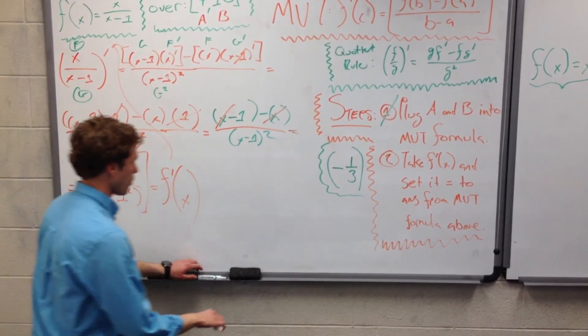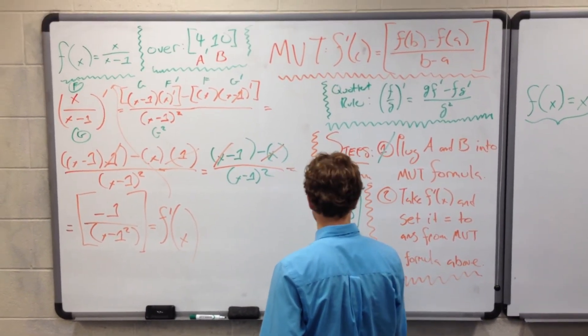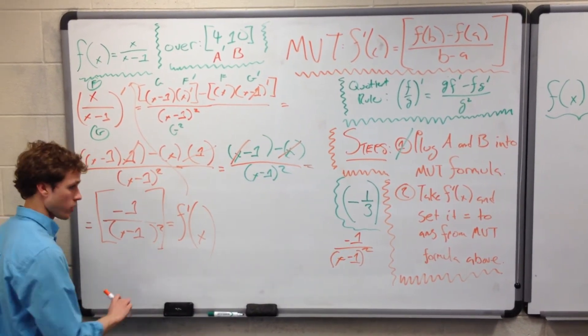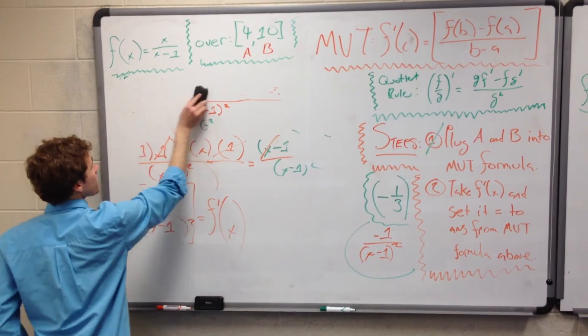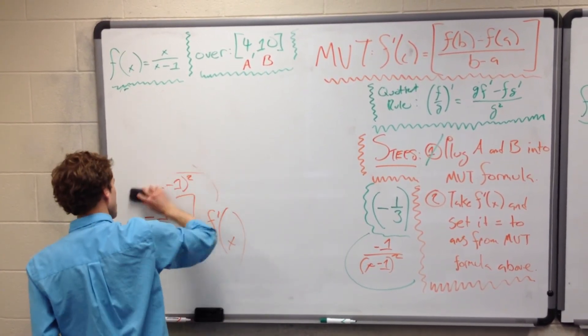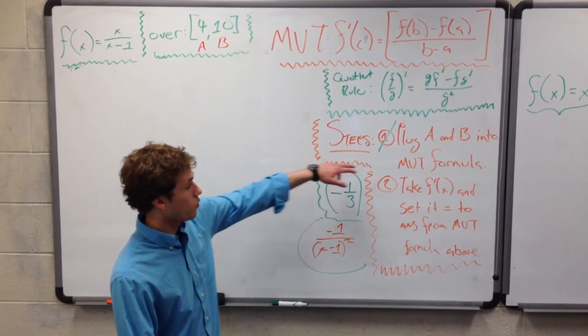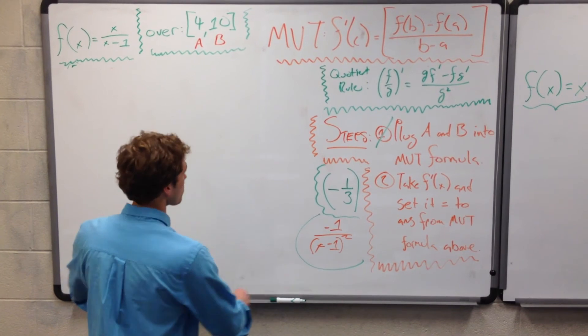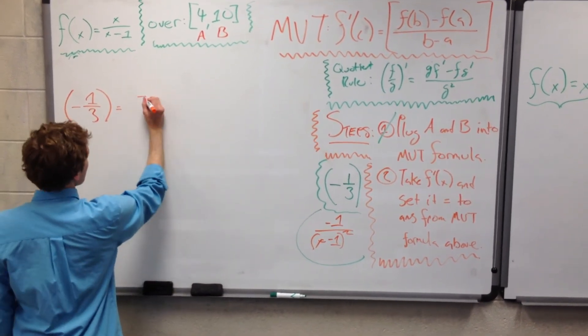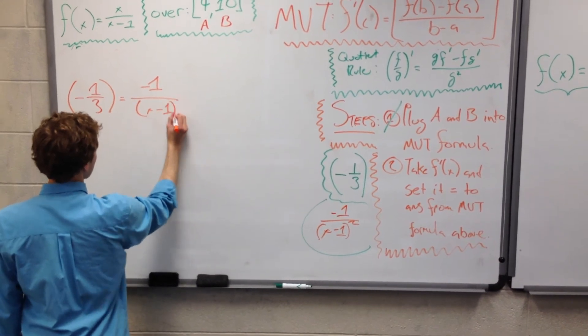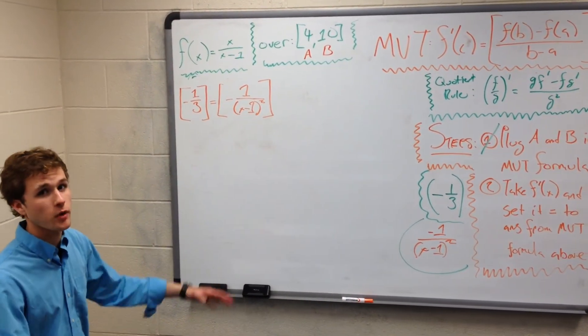Now we have this value. These are the two important values. We have negative 1 over X minus 1 squared. So now we have both of these values. We can erase all of this work. And the only step left is to set these two things equal. F prime of X, and what we got from the mean value theorem formula. So we set these two things equal to one another. So we have negative 1 third equals negative 1 over X minus 1 squared. So we needed to set these two expressions equal to zero.